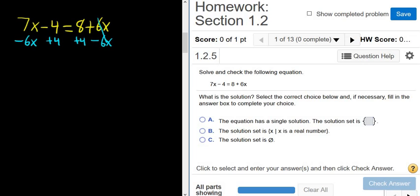So these cancel. These cancel. So you're left with 7x minus 6x. That's x. And that's equal to 12. And that is the final answer.